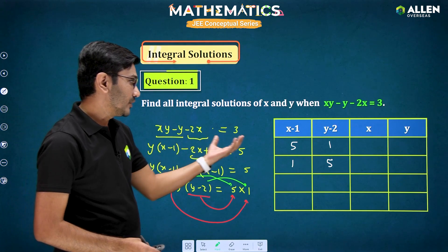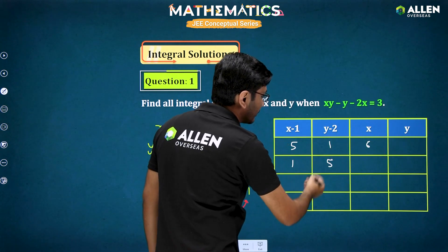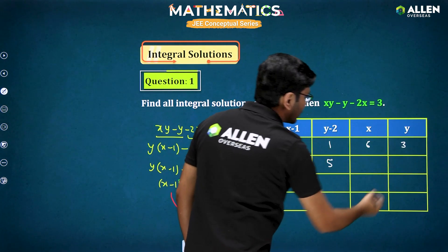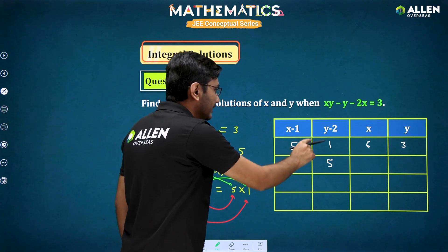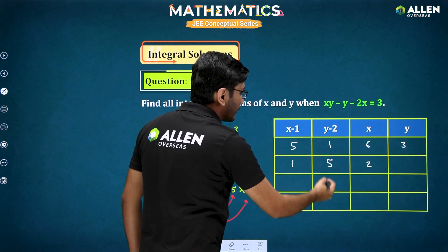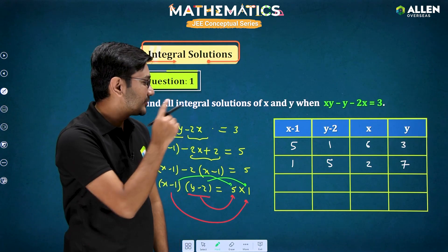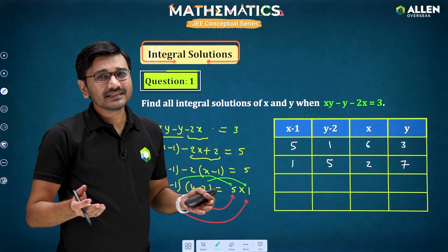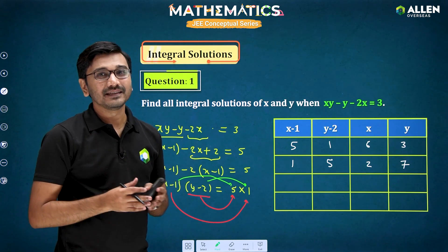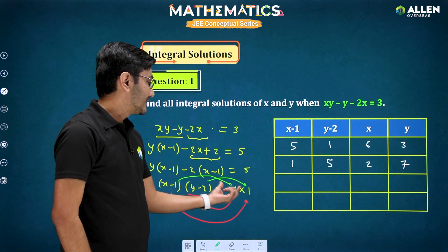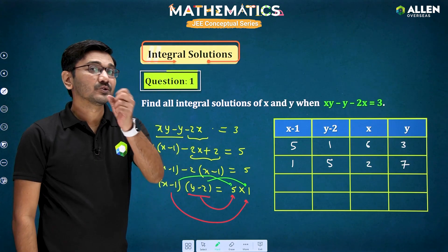If x minus 1 equals 5, we get x equal to 6, and y minus 2 equals 1 gives y equal to 3. So one solution is (6, 3). If x minus 1 is 1, we get x equal to 2, and y minus 2 equals 5 gives y equal to 7. So another solution is (2, 7). But are these all the solutions? Can we factorize the right side in other ways?